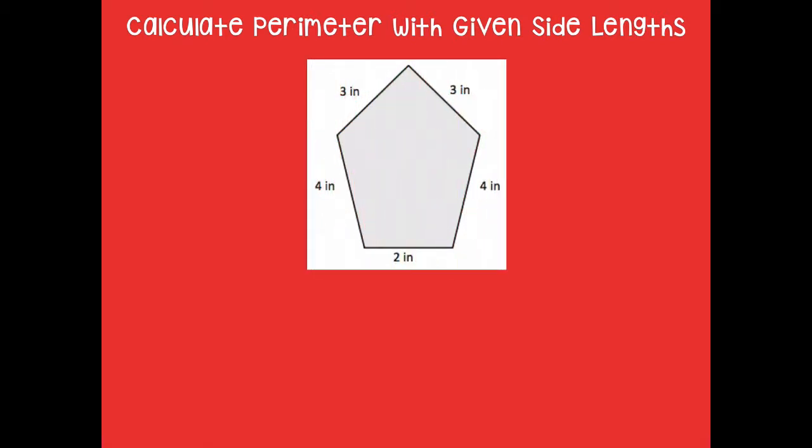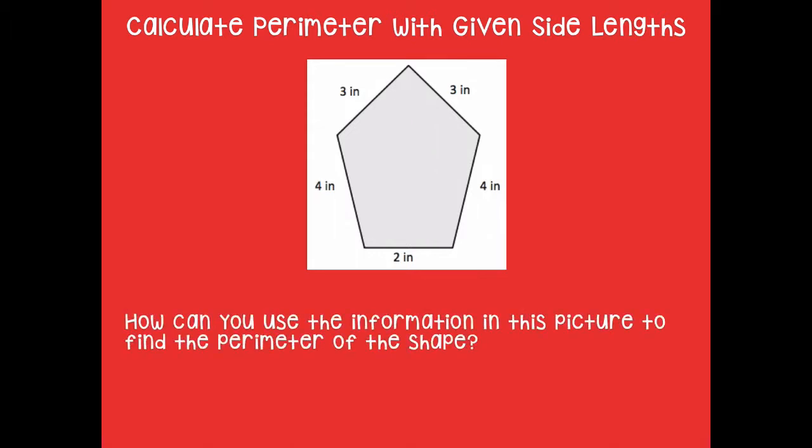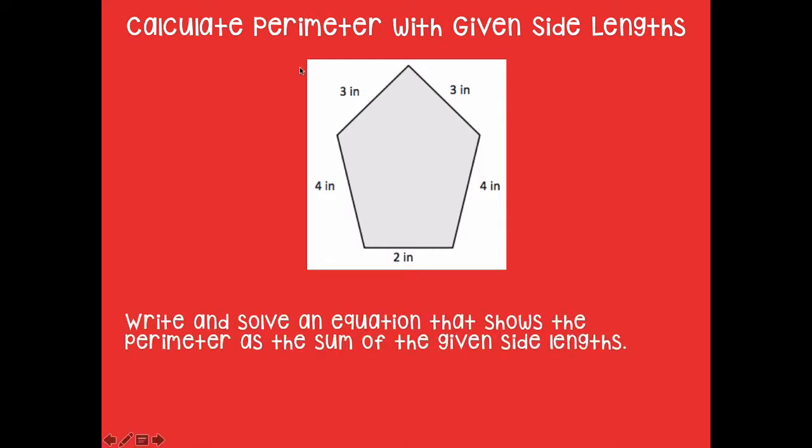We're going to start with calculating the perimeter with given side lengths. So that just means you're going to have a shape like this, you're going to be given all of the side lengths, and we're going to find the perimeter. So how can you use the information in this picture to help you find the perimeter of the shape? Yeah, we can add all of those numbers together, right?